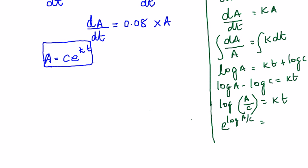Then we take e power on both sides. e^(log(A/c)) is equal to e^(kt). So e^(log(A/c)) becomes A/c is equal to e^(kt), or we can write it as A is equal to Ce^(kt).